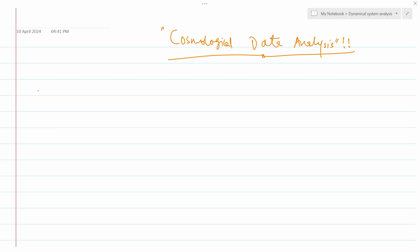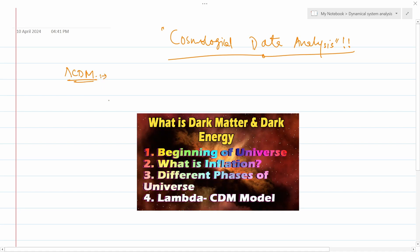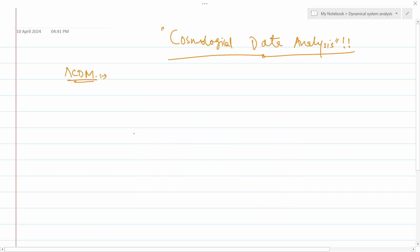First, I will define the simplest model: the Lambda CDM model. If you have not heard about it, you can check my other videos where I have discussed it explicitly. Lambda stands for dark energy, and CDM stands for cold dark matter.